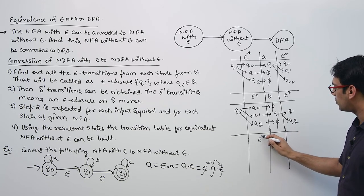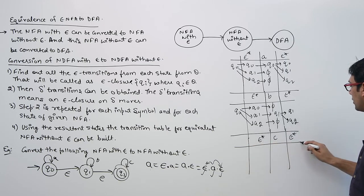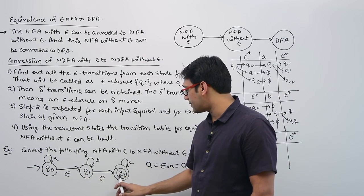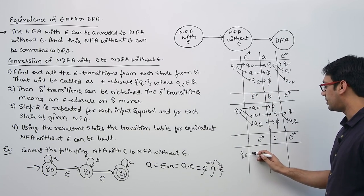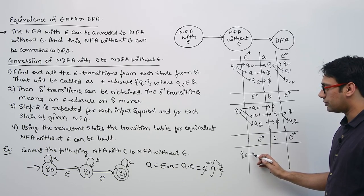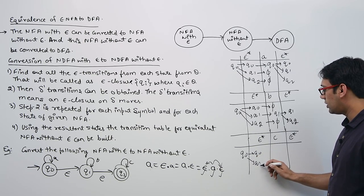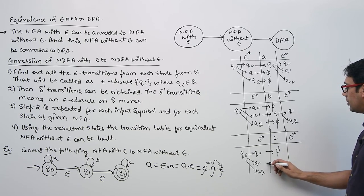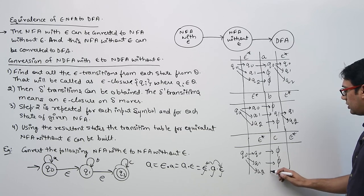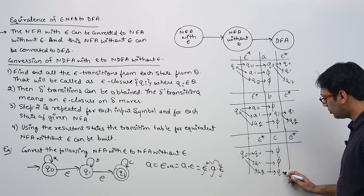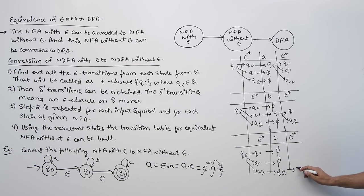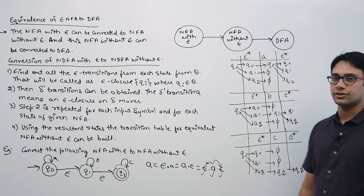Now let us find the same for symbol C. The Epsilon closure of Q0 is {Q0, Q1, Q2}. If you are at Q0 seeing symbol C you are not going anywhere. If you are at Q1 seeing symbol C you are not going anywhere. If you are at Q2 seeing symbol C, you go to Q2 itself. So the Epsilon closure of Q2 is just Q2. Therefore for symbol C from Q0, the result is {Q2}.